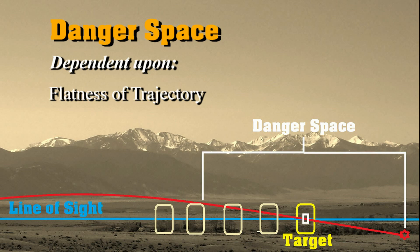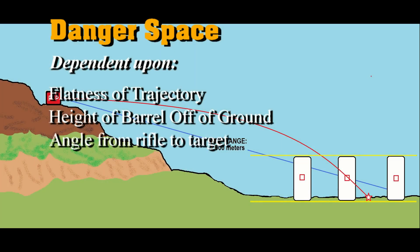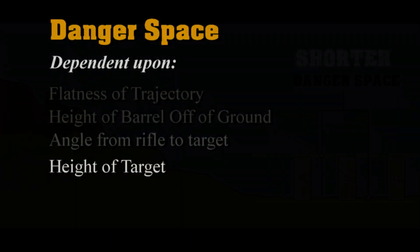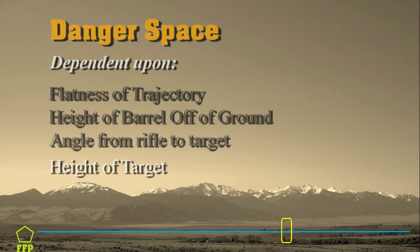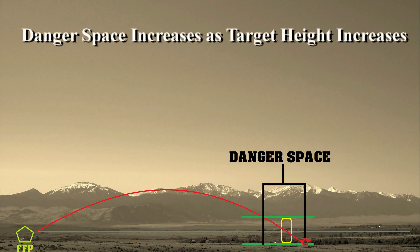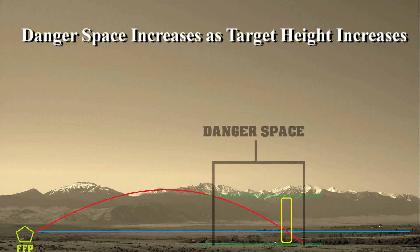The height of the barrel off the ground, or the angle from the rifle to the target, is also going to affect it — the higher the gun, the smaller the danger space because you're coming in at an angle. The height of the target itself will also affect danger space, since we're talking about vertical distances. If you have a 30-inch high target — the lethal bracket of a two-legged target — you're going to have a greater danger space because you have more forgiveness for a high or low miss on a taller target.